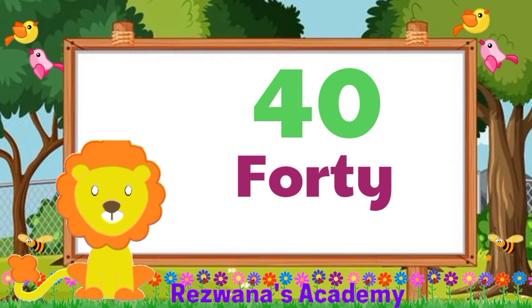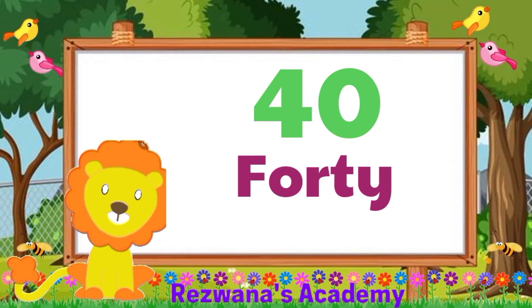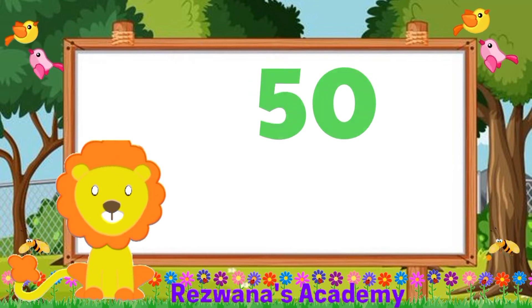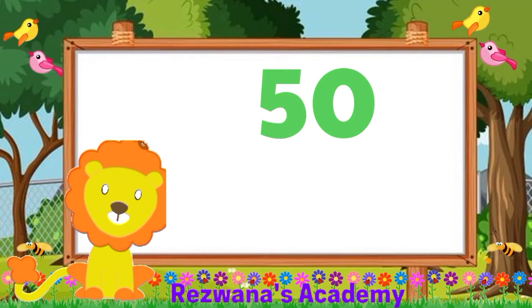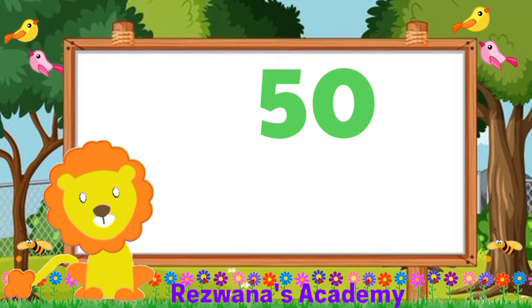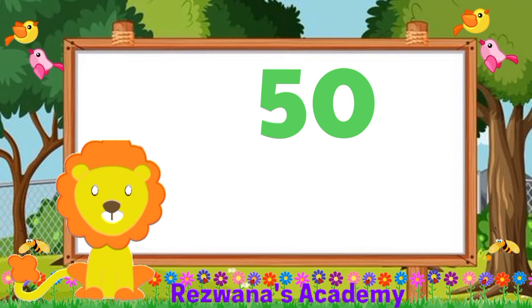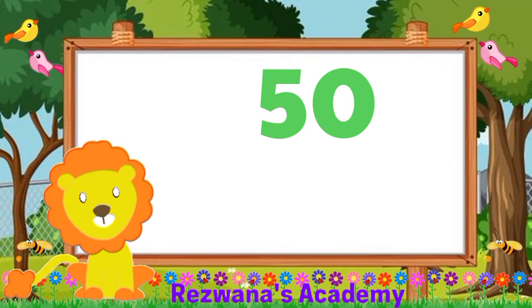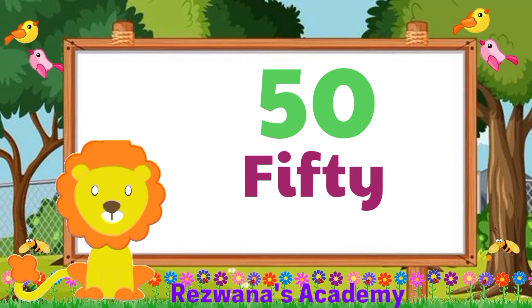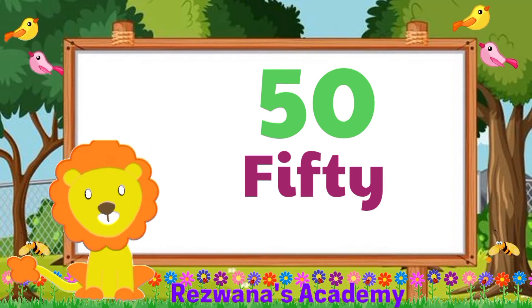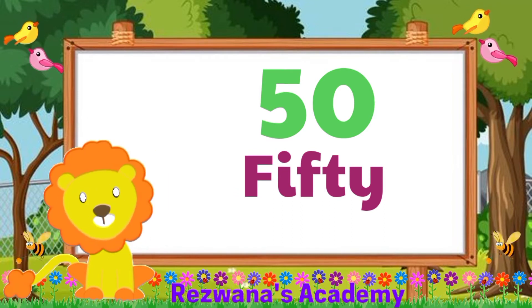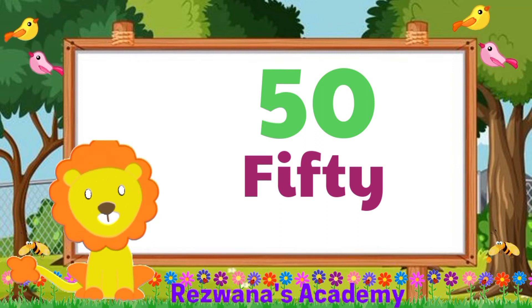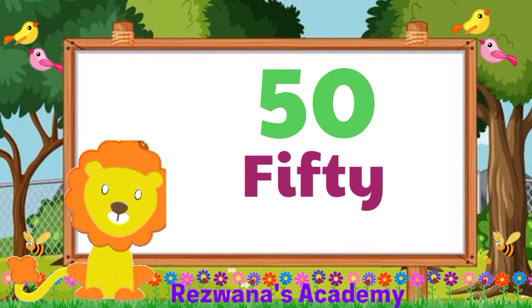Moving on. Now we have superb number 50. It is also made of 5 letters. So let's spell it together: F, I, F, T, Y. 50. That's right.